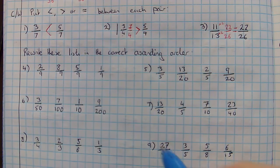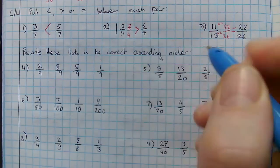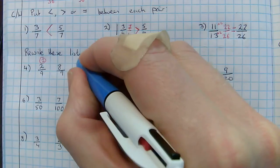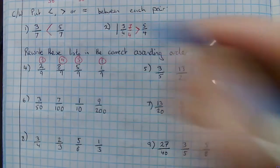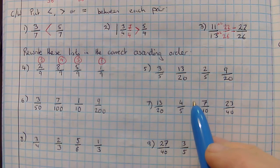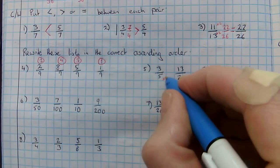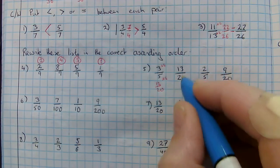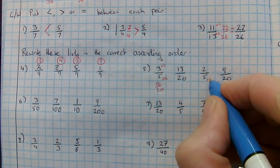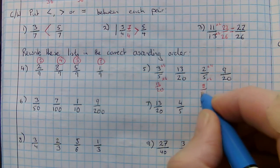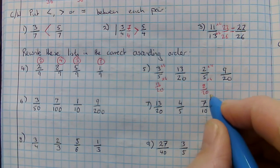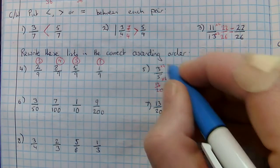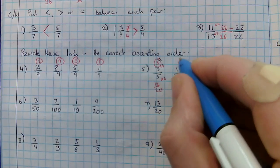Putting these in the correct order, the smallest here is one out of nine, then two out of nine, then five out of nine, then eight out of nine. Looking at the next one, I'm going to convert those which aren't in twentieths to out of twenty, so I need to times that by four, which would give me twelve out of twenty. Twelve out of twenty, thirteen out of twenty, times this by four to give me eight out of twenty, and I've got nine out of twenty. So the smallest is eight out of twenty, followed by nine out of twenty, followed by twelve out of twenty — or three-fifths — followed by thirteen out of twenty.